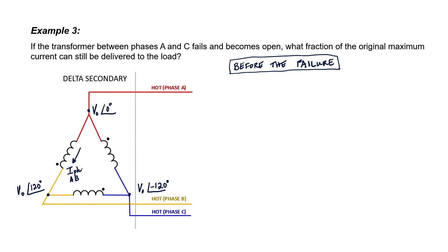We'll call it the phase current. So this is the phase current between A and B. This is the phase current between C and A. And this is the phase current between B and C.